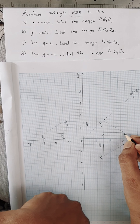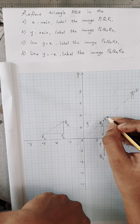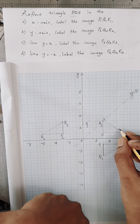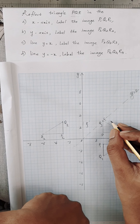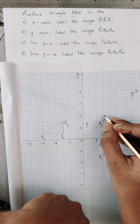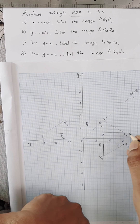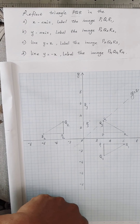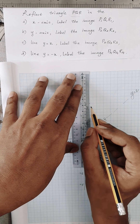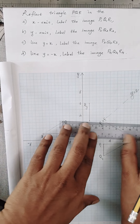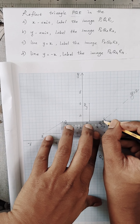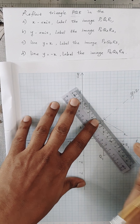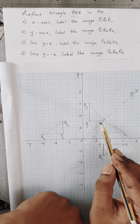What about R? We count the diagonal distance perpendicular to the mirror line — it's 2 and a half units. We count the same diagonal distance of 2 and a half to the opposite side. That's the new position of R, labeled as R3. We join these three points to form the image triangle P3, Q3, R3.